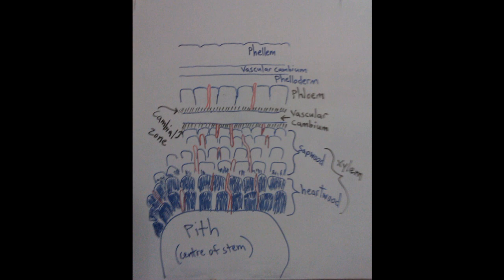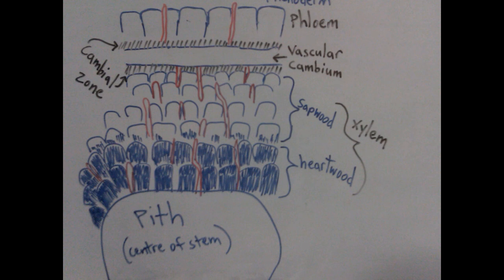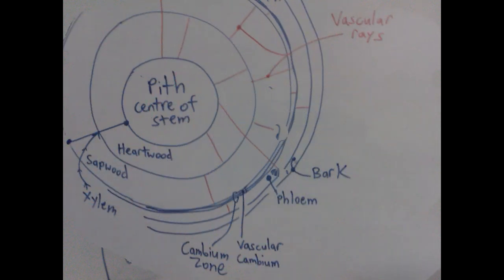The pith is tissue, mostly parenchyma cells, at the center of the stem, encircled by xylem, that can store and transport material throughout the tree. In older trees, the pith can dry out, die, or become replaced by the function of the xylem.